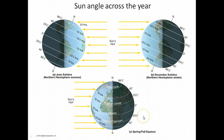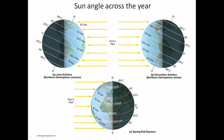On the equinoxes — spring or fall, March 21st or September 21st — the sun's vertical rays are right on the equator. So anybody at zero degrees latitude on that day will see the sun directly overhead. But anybody north or south of that line will see the sun slightly lower, and the further north or south you go, the lower the sun appears at noon on that day.